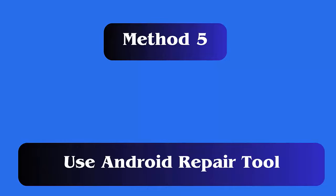Method five: Use an Android repair tool to fix the pink line issue on your OnePlus phone. You can also go for a professional tool like Android Repair to fix the pink vertical line issue. This is a highly recommended software by experts, as it fixes any kind of problem on Android phones with one click.